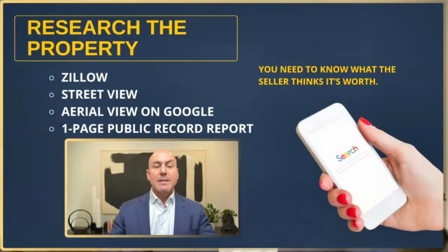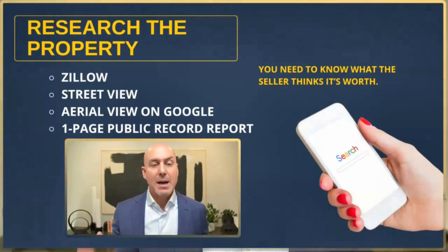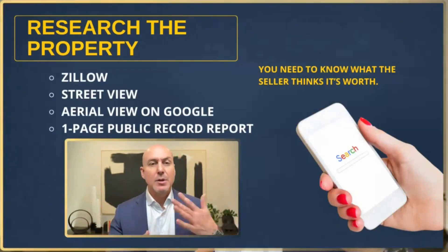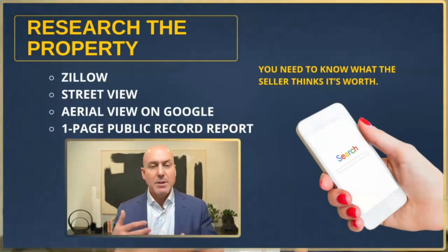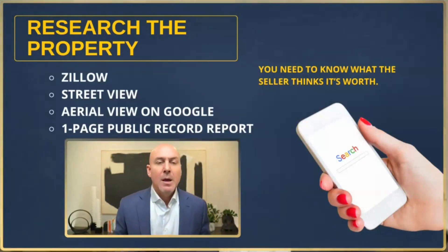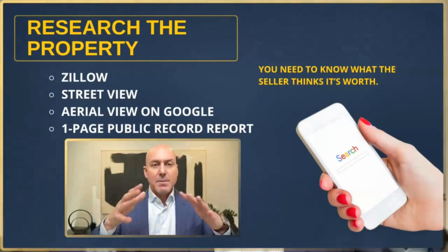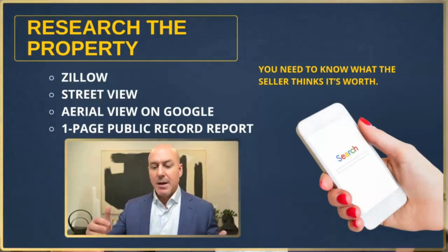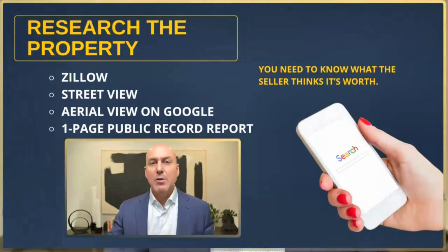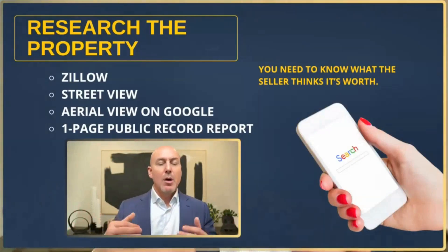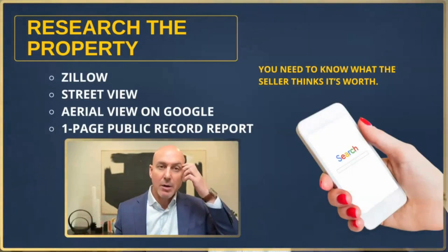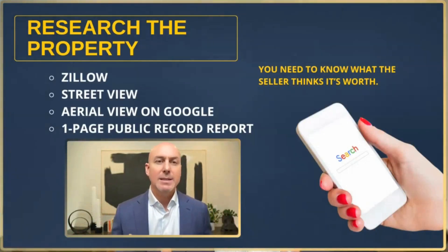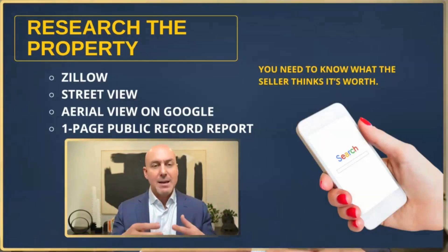Next, we want to go to where we find out what the seller thinks their home is worth. Now that I have the public record, I can start looking at Zillow, the street view, the aerial view on Google. What I'm looking for — especially on the aerial — is what does this property back up to? Is there a crack house next to it? Do they back up to a train? Are they three doors down from a Home Depot? Are there power lines running through the backyard? Are they on a golf course? All of these things have a factor.